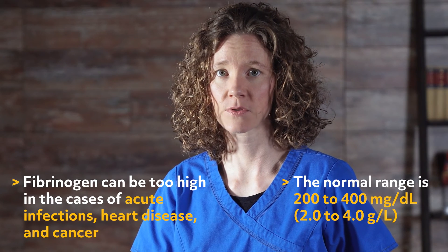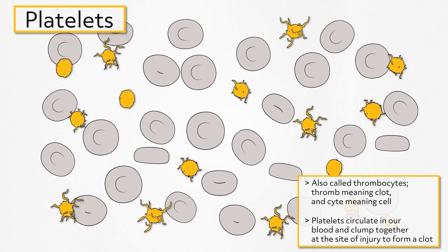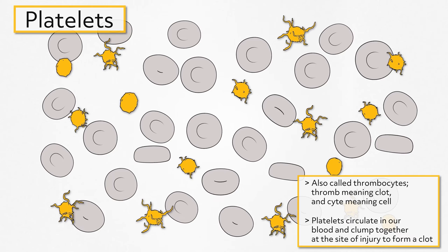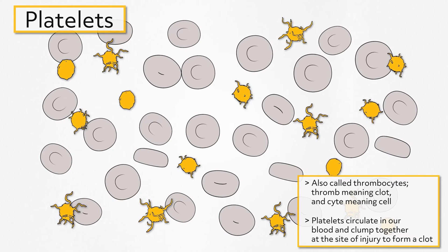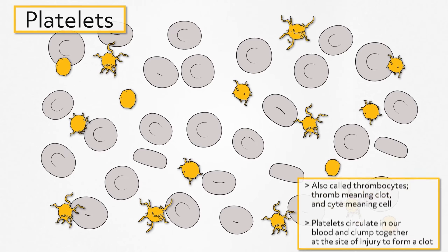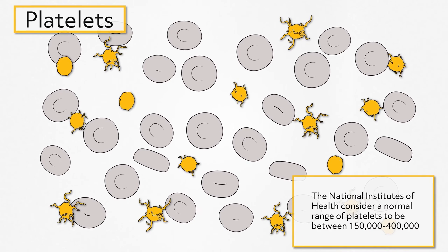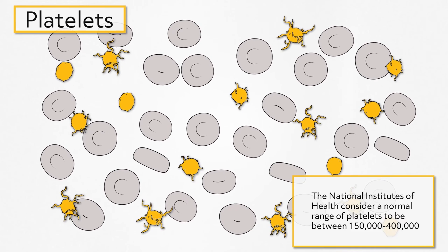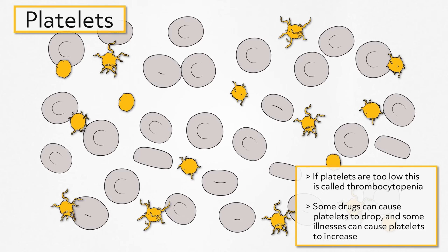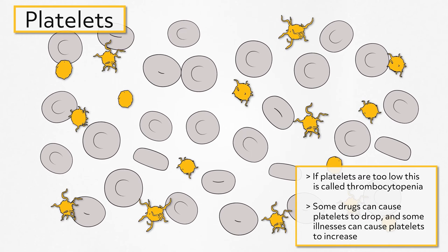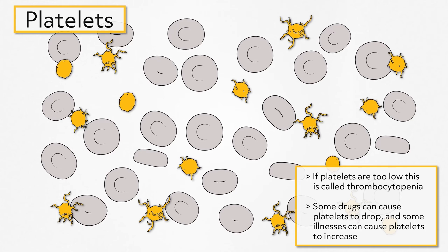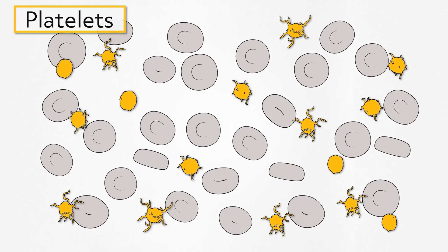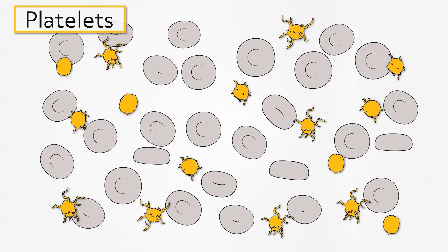Platelets are also called thrombocytes — 'thromb' meaning clot, and 'cyte' meaning cell. Platelets circulate in our blood and clump together at the site of injury to form a clot. The National Institutes of Health consider a normal range of platelets to be between 150,000 to 400,000. If platelets are too low, this is called thrombocytopenia. Some drugs can cause platelets to drop, and some illnesses can cause platelets to increase. We don't want these to be out of balance, which would cause too much clotting or not enough.